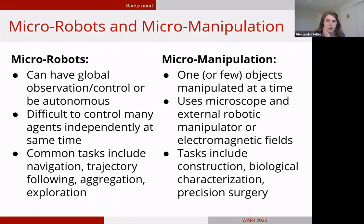On the other hand, we have micro manipulation research, where we're mostly focusing on moving one or a few objects at a small length scale. These almost entirely use external microscopes, external robotic manipulators, or electromagnetic fields to accomplish the task. Since we're manipulating objects, the tasks we're interested in is mostly construction or biological characterization, working toward eventually precision surgery and applications like that.